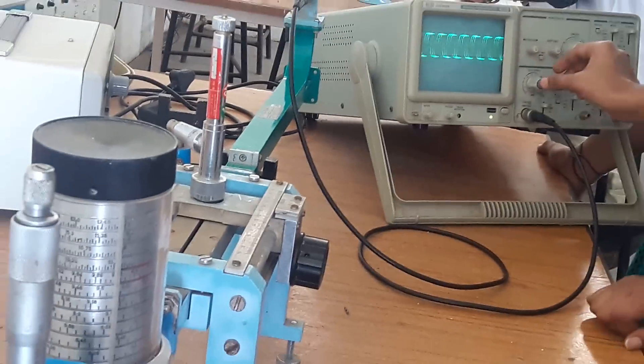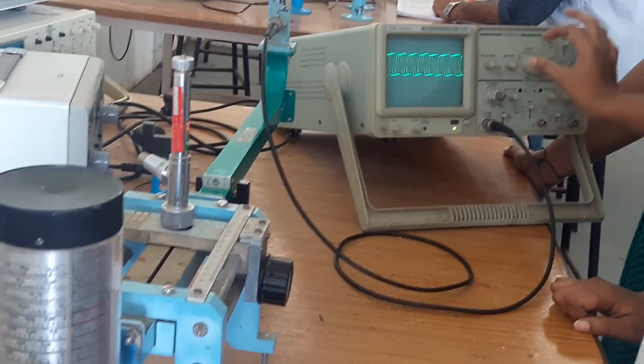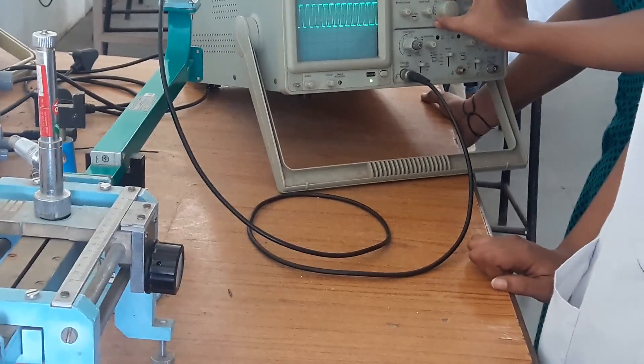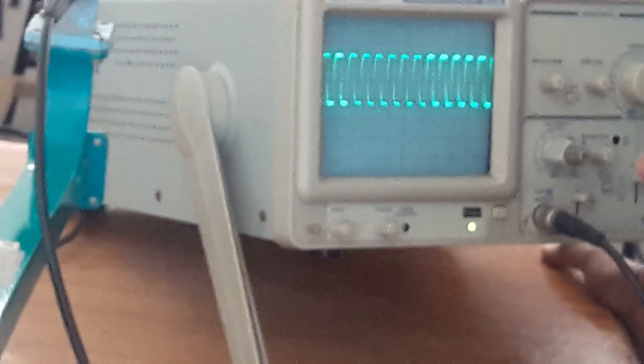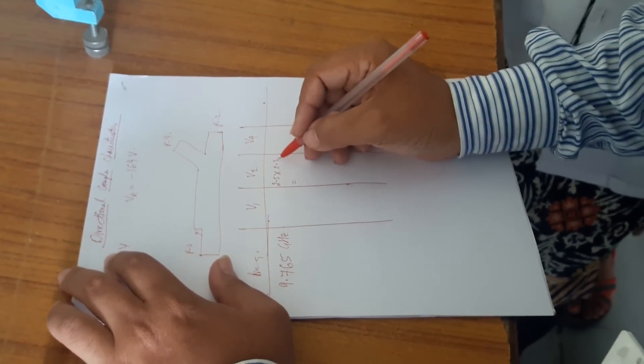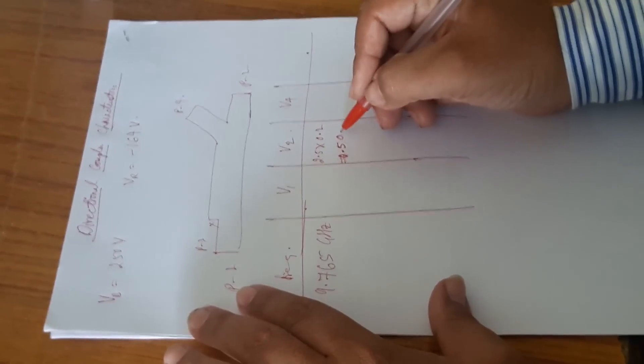The frequency is 9.7676.5 gigahertz, as you can see from the depth of the dip. Now we will see what is the voltage at V2. For calculating the voltage, you can move the volt-per-division knob to the appropriate number of divisions. The voltage we are getting at V2 is 0.5 volts.